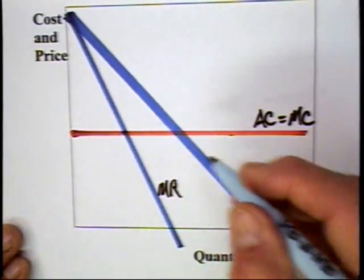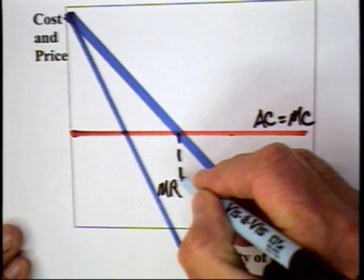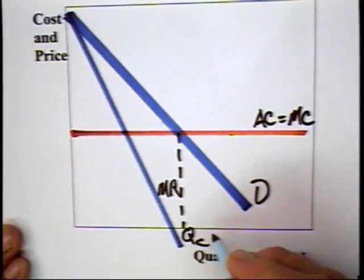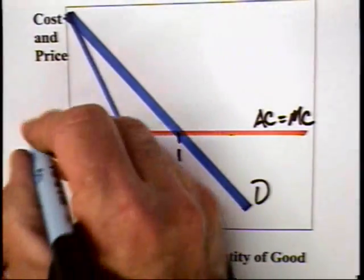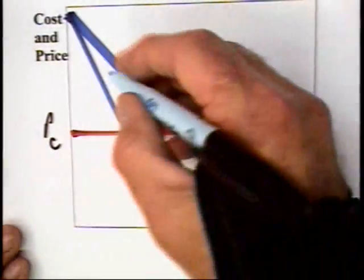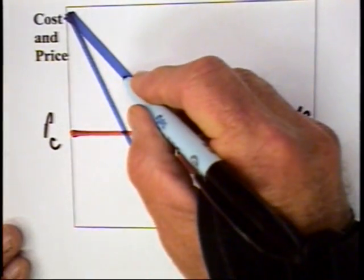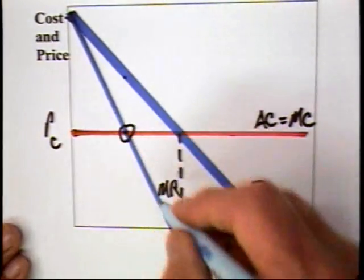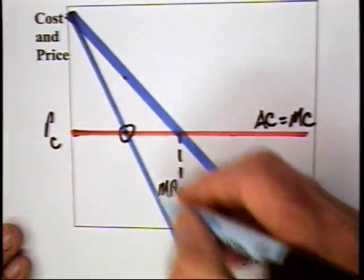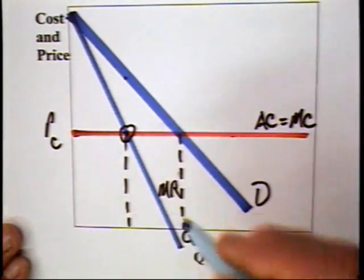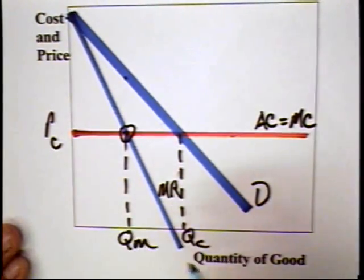Now, if we're talking about a competitive market, this market will produce a quantity of QC and sell the good for a price of PC. If it's a monopoly market, then the monopoly will produce where marginal cost is equal to marginal revenue, which is the intersection of marginal revenue curve and marginal cost curve, or the monopoly will produce a quantity QM.